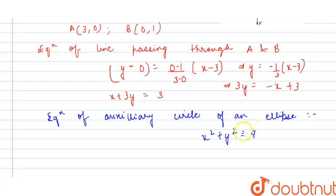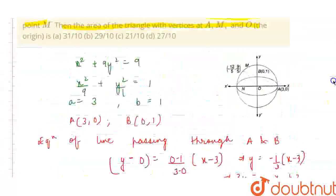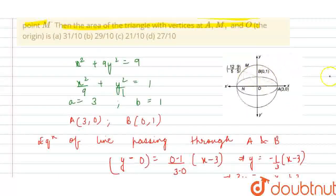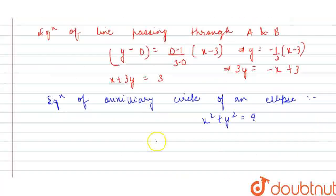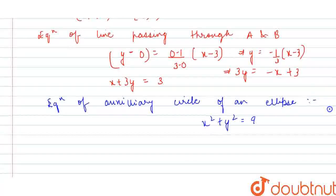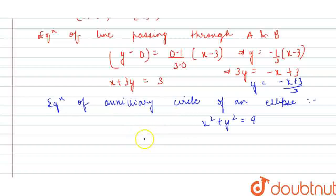Proceeding further — the line AB cuts the auxiliary circle at point M. So we have to find the coordinates of M by solving the two equations simultaneously. From the line equation, y = (−x + 3)/3. Substituting into the circle equation: x² + (−x + 3)²/9 = 9.